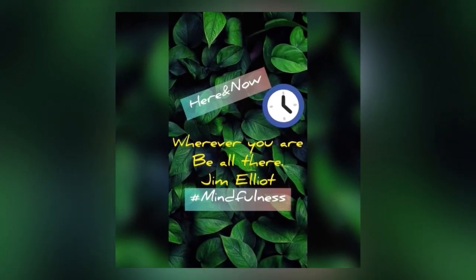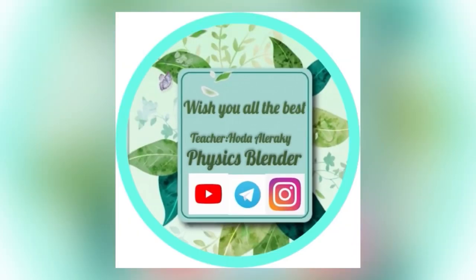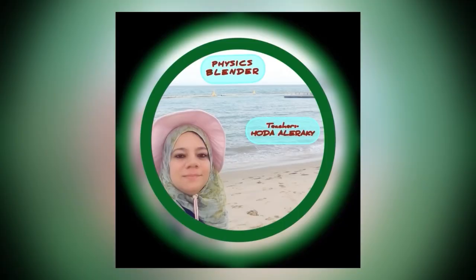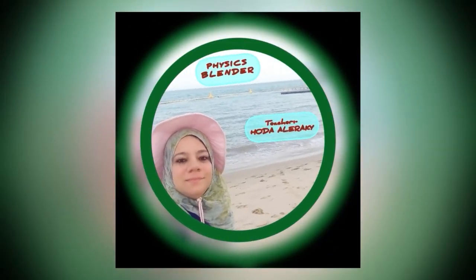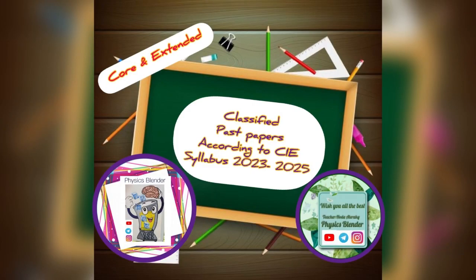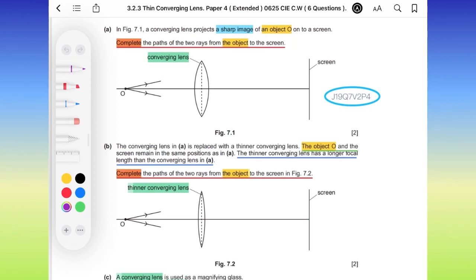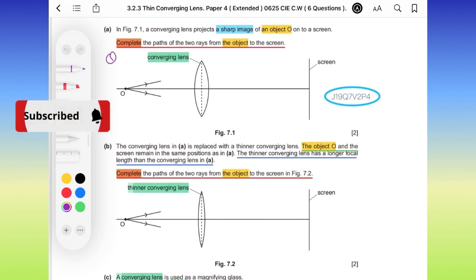Subscribe for more videos. Let's continue our classwork about thin converging lens, paper 4. It's classwork for extended candidates and we have question 5.